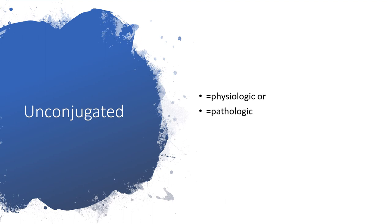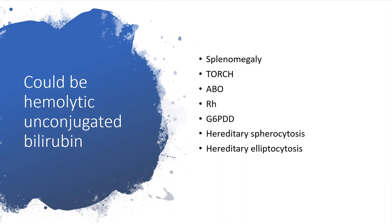When we measure the bilirubin, if it is unconjugated, then we are definitely going to be dealing with either physiologic or pathologic jaundice. It could be hemolytic unconjugated hyperbilirubinemia.